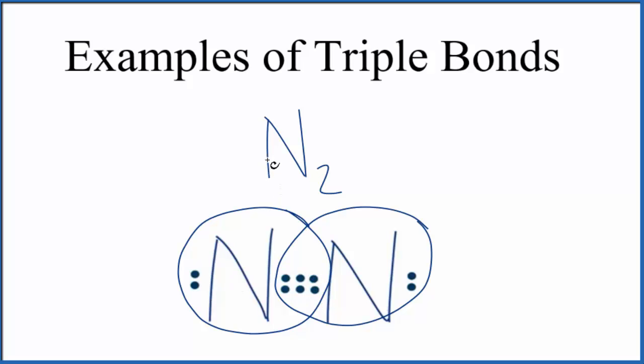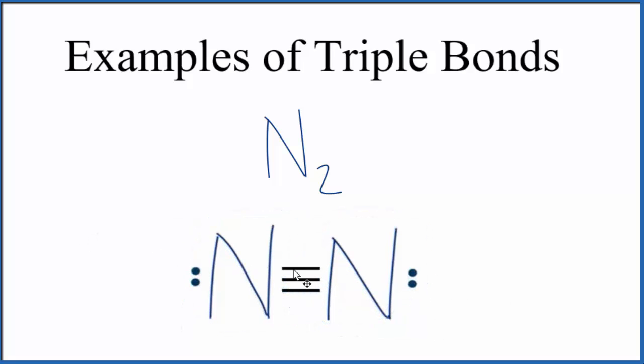Nitrogen gas, N2, also called diatomic nitrogen, has a triple bond. We could also write that triple bond like this with lines. Each line represents a pair of electrons shared between the nitrogen atoms.